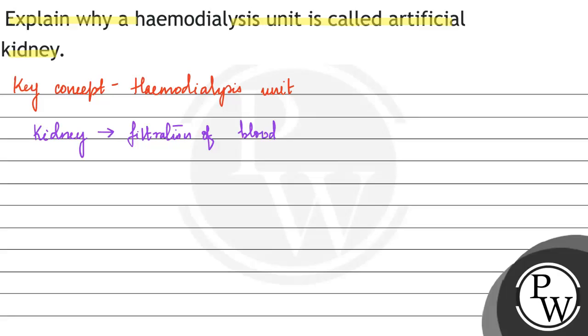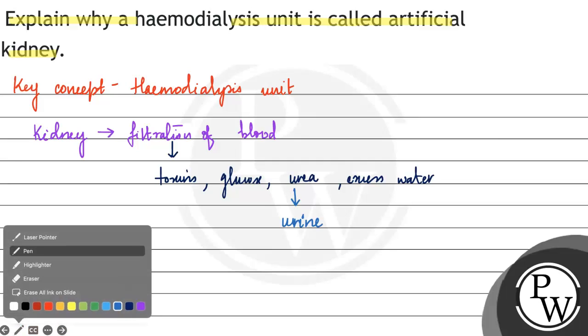The kidney filters the blood, removing toxins, glucose, urea, and excess water. All these removed substances form urine. The filtered blood is then sent back into circulation.